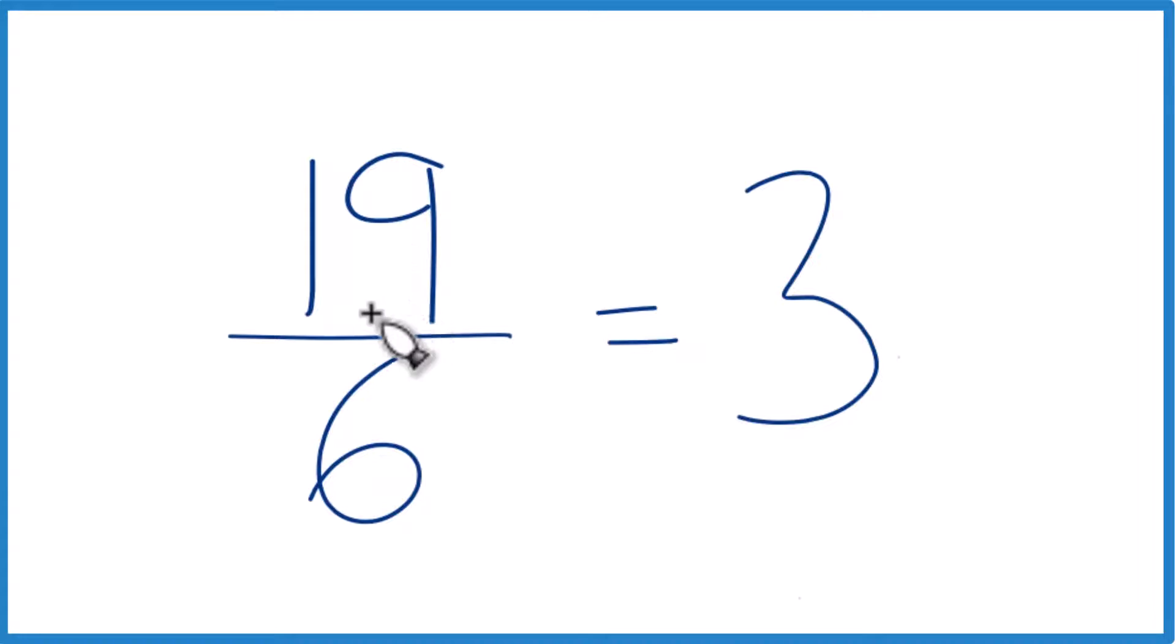3 times 6 is 18, and we'll have 1 left over, a remainder of 1. So we're just going to put that as the numerator, bring the 6 across, and that's it.